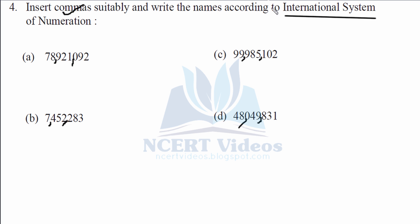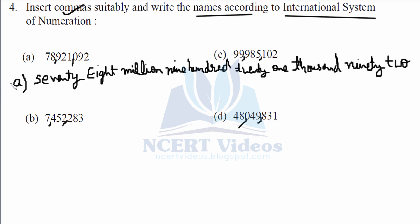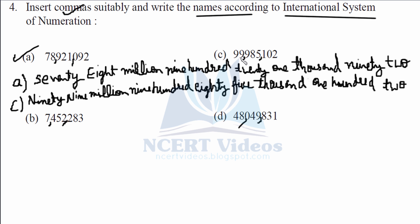Now the second part is to write the numerals in word form according to the international system. Part a: seventy-eight million nine hundred twenty-one thousand ninety-two. This is the international system of numeration. Likewise for part c — doing it in this order due to space: ninety-nine million nine hundred eighty-five thousand one hundred two.